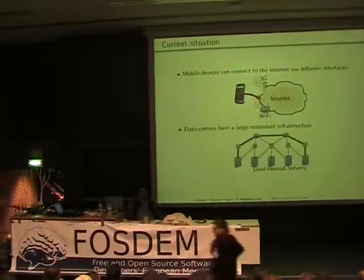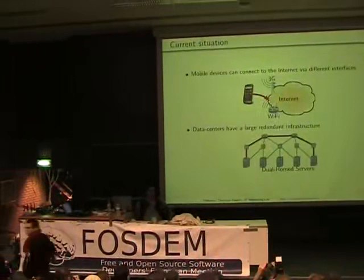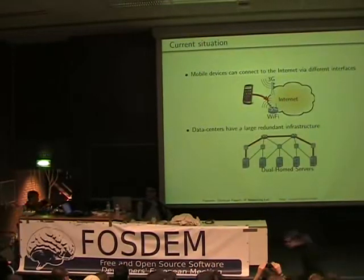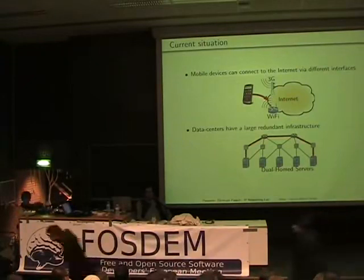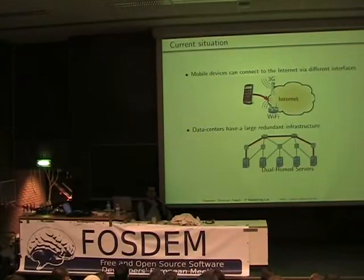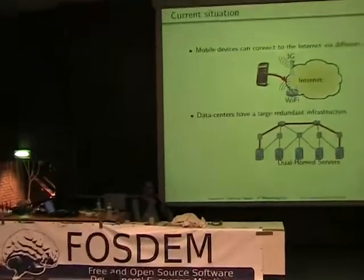To start off, you all have your mobile phones with Wi-Fi and a 3G interface. And you can connect, for example, while you are here, you can connect to the FOSDEM network, and you can also connect to a 3G network. But unfortunately, you will only be using one of these interfaces, potentially only the Wi-Fi interface. And so you are not using all the resources you have available to your phone.